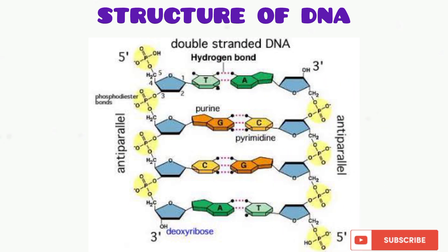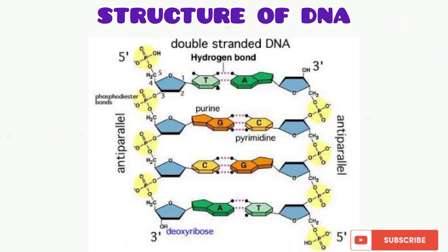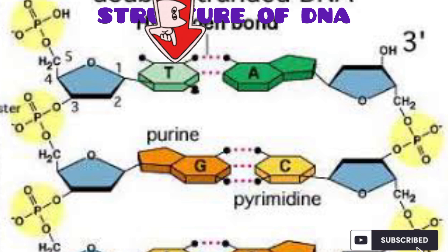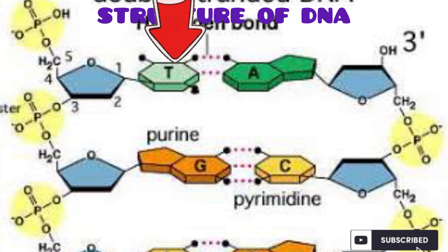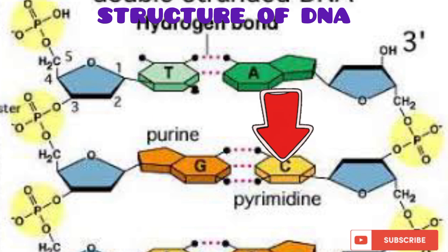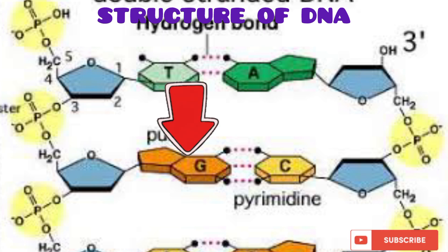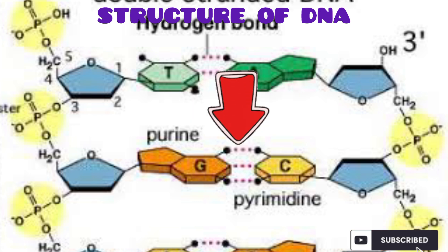Each nucleotide is made up of a phosphate group, sugar, and a nitrogenous base. The nitrogenous bases are of four types: adenine, thymine, guanine, and cytosine. Adenine always combines with thymine, and guanine always combines with cytosine. Between adenine and thymine there is a double hydrogen bond, and between guanine and cytosine there is a triple hydrogen bond, as shown in the diagram.